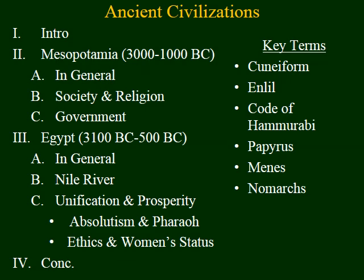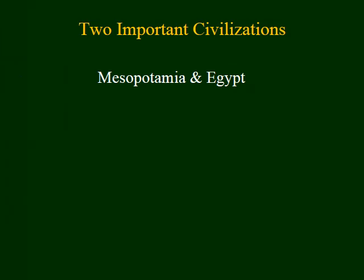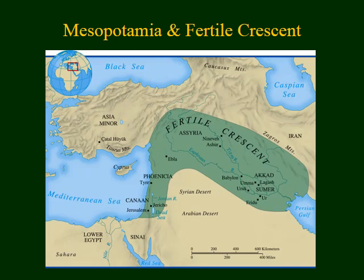The first of these civilizations to explore would be Mesopotamia. You're probably asking yourself: why did civilization begin in these regions of Mesopotamia and Egypt? The answer is actually quite simple — it began there because they had access to something that everyone needs, and that would be water. The green area of this map identifies the location of ancient Mesopotamia, today's Middle East, labeled here as the Fertile Crescent.